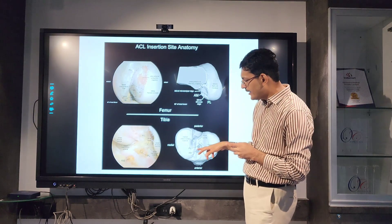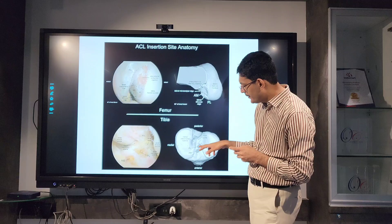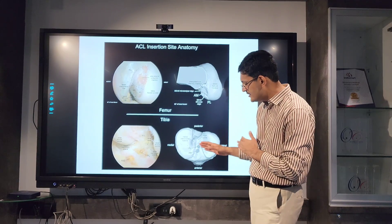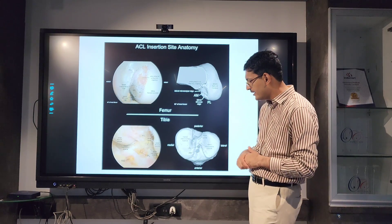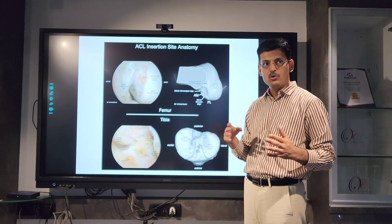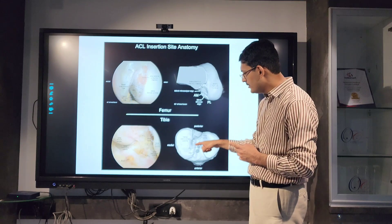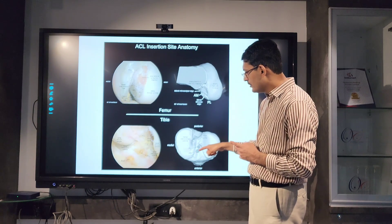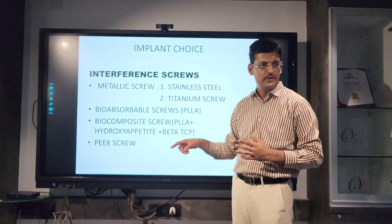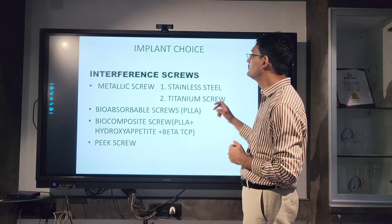On the tibial plateau, you also have the AM and PL bundle. The PL is a little posterior and the AM is a little anterior. It has recently been demonstrated as an arrow-shaped insertion on the tibial plateau.